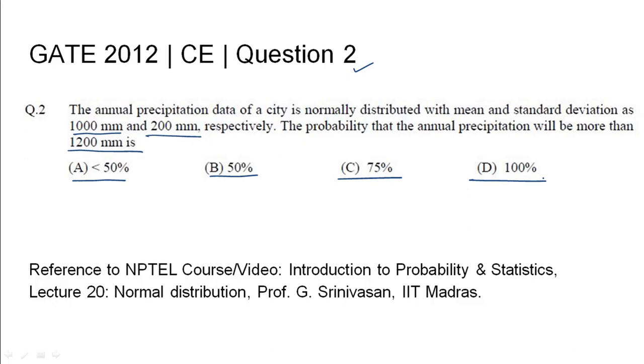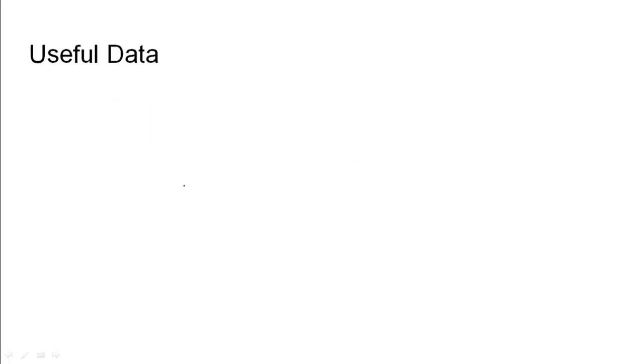The relevant NPTEL reference has been cited. When we talk about normal distribution, it is of a bell shape. Here the probability is found depending upon where the variable lies with respect to the mean and standard deviation.